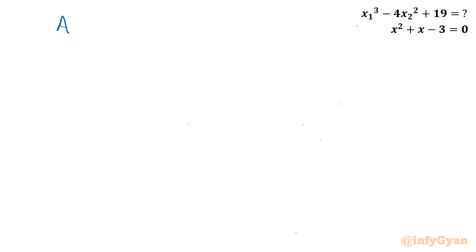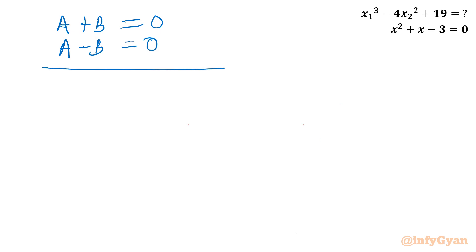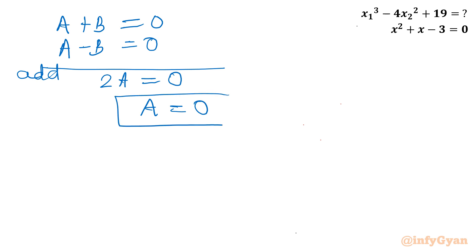We have a + b = 0 and a - b = 0. Adding both equations gives 2a = 0, so our required expression a = 0. This concludes Method 1.